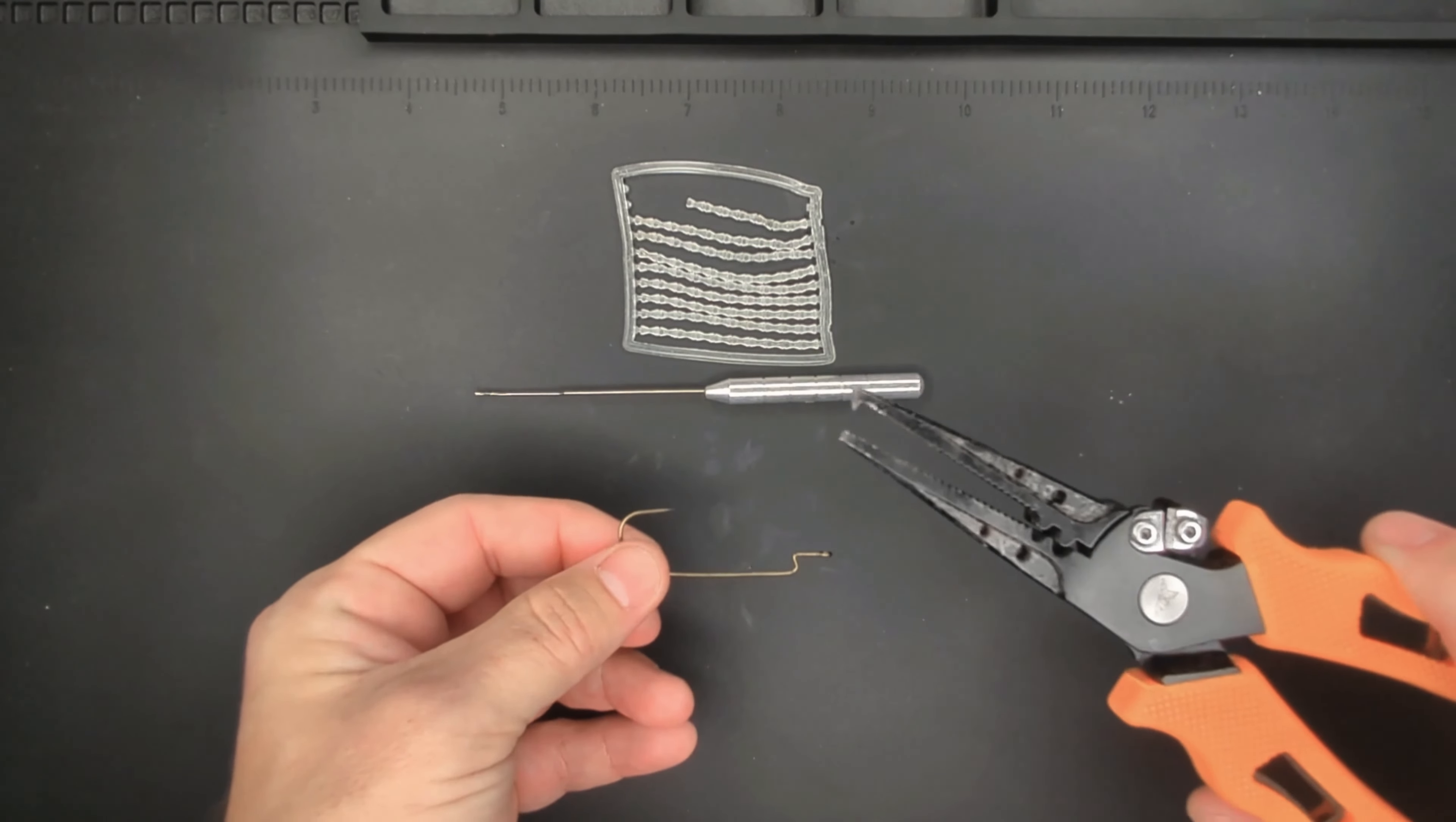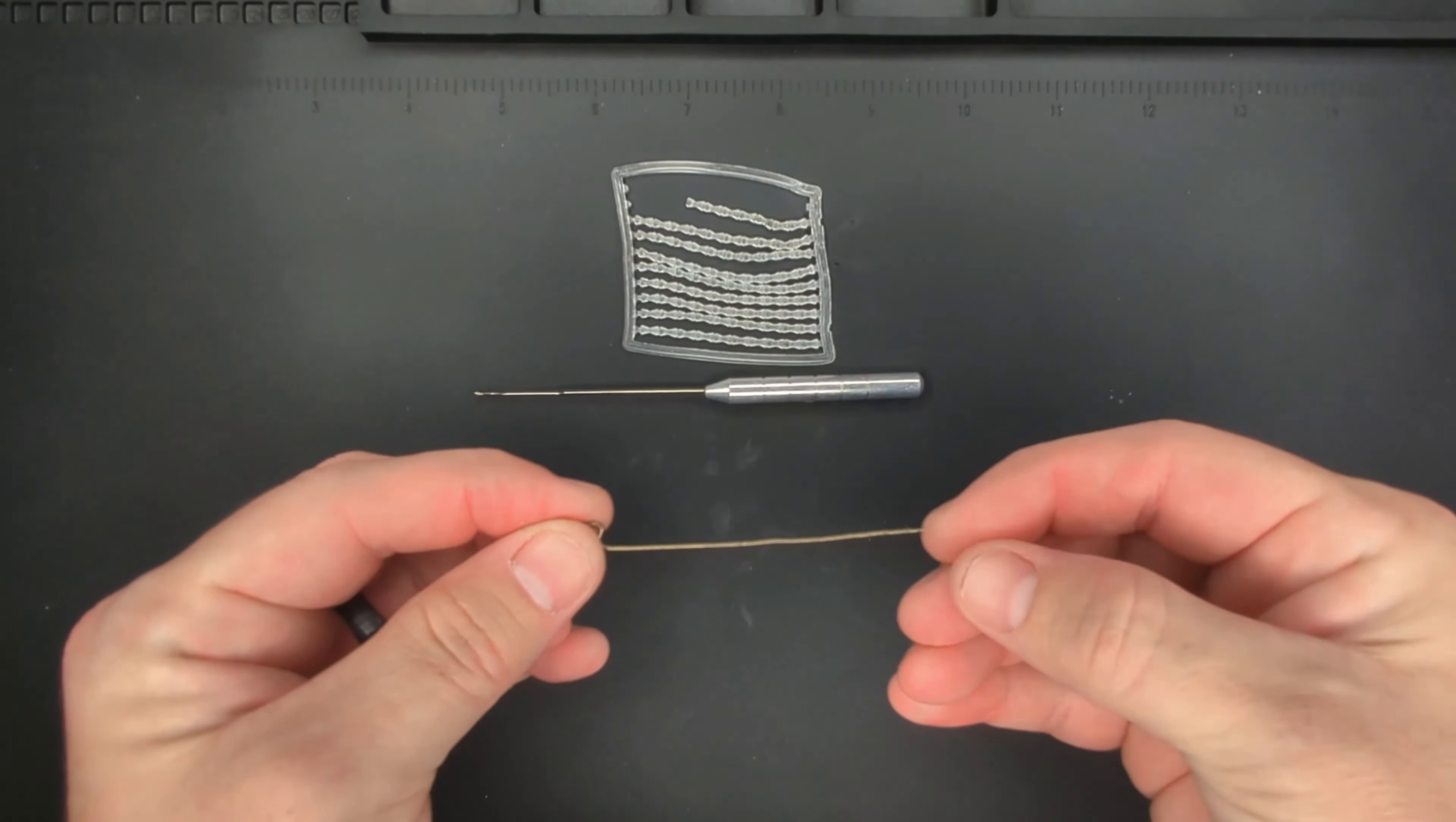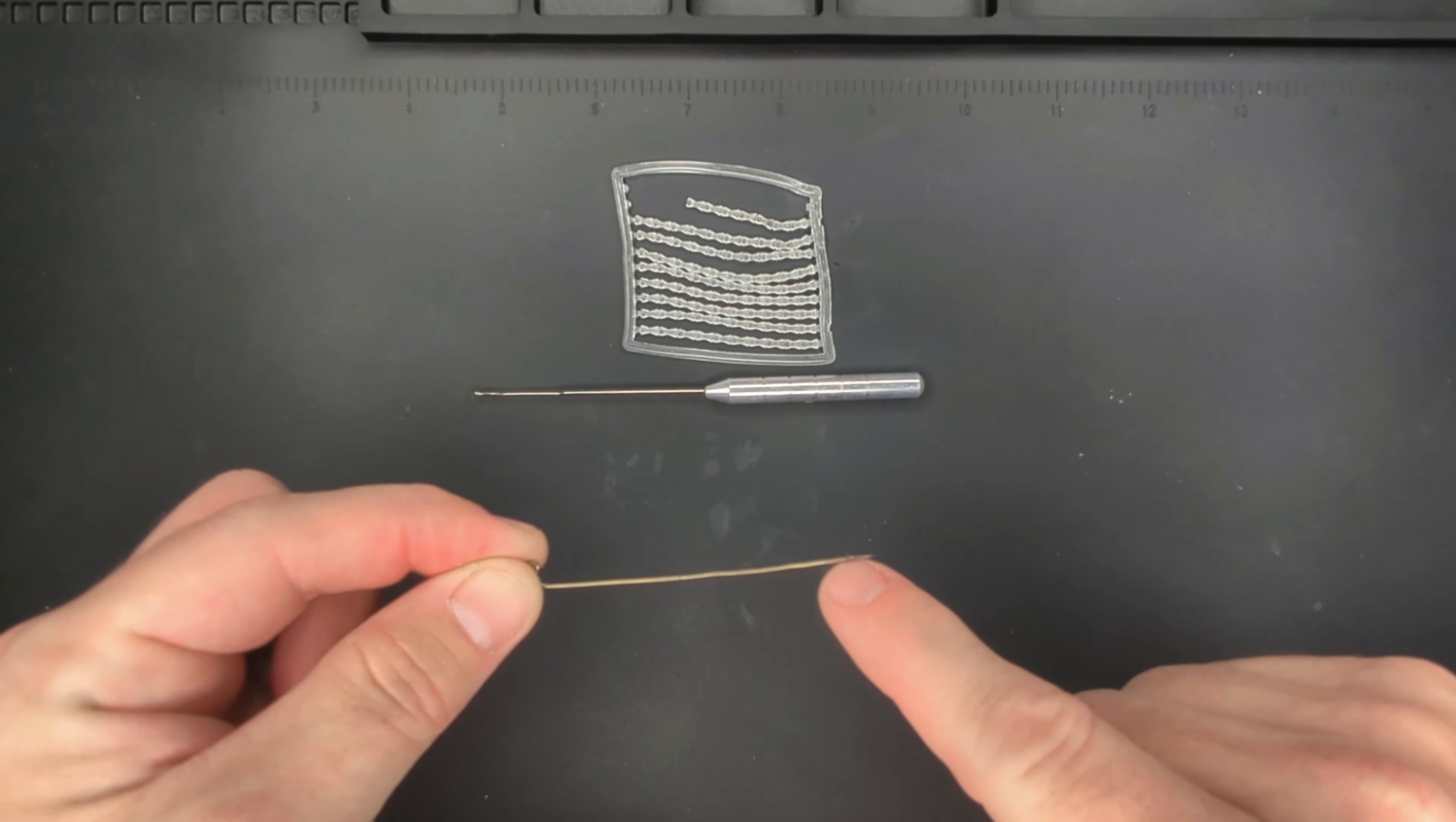Take your worm hook and a pair of pliers and you're going to bend the shank straight. It doesn't need to be perfect, just make sure that you don't crimp the barb because that's going to act as our hook.